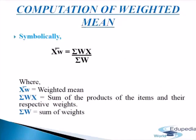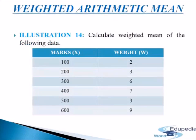Computation of weighted mean: each item of the series is multiplied by its weight, and the products are totalled. This total is divided by the total of weights, and the resulting figure is the weighted mean. Symbolically, x-bar(W) equals sigma(WX) divided by sigma(W), where x-bar(W) is the weighted mean, sigma(WX) is the sum of products of items and their respective weights, and sigma(W) is the sum of weights. The weighted arithmetic mean differs from simple arithmetic mean in that different items are given different weights according to their relative importance.